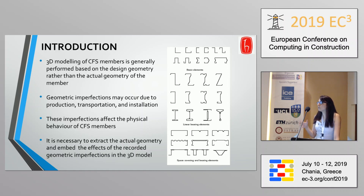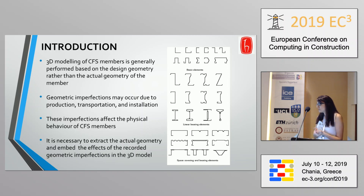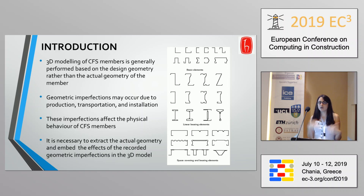We are not modeling the cold form steel members by using their as-is geometry but rather we're using their design geometry. However, due to production, transportation, and installation problems there are some imperfections on these cold form steel members which changes the behavior of the member itself. So we require to get these geometric imperfections and incorporate those into our model to get the actual behavior of the member.